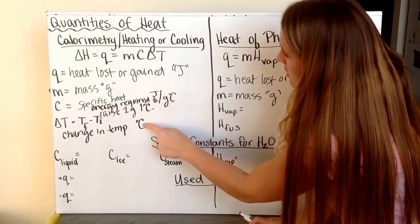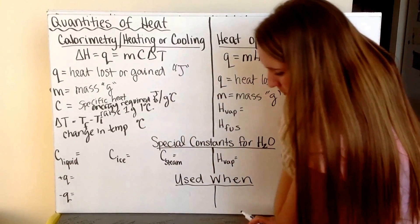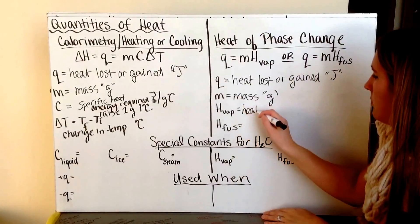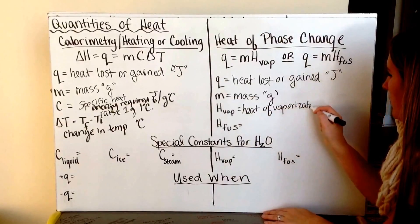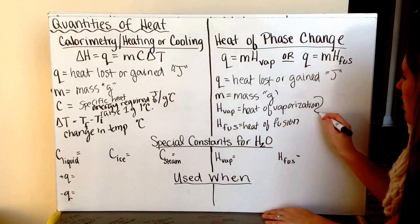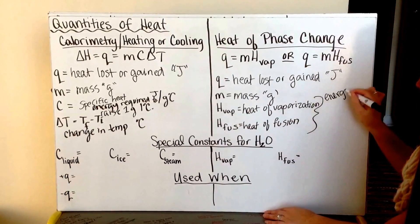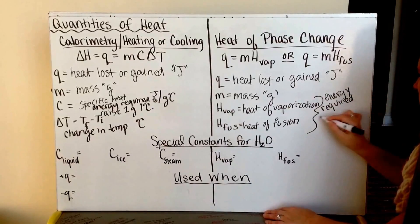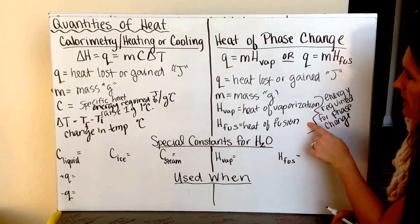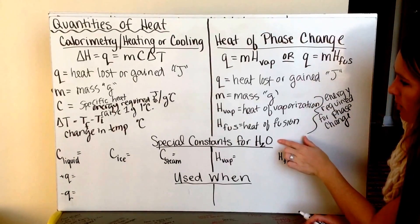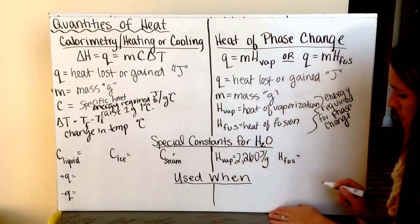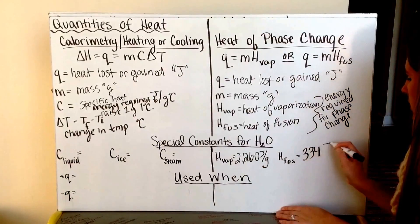Notice that the units — joules, degrees Celsius, and grams — match the units in the specific heat. For the phase change equation, we have heat of vaporization and heat of fusion, which are the energy required for the phase change. For water, the heat of vaporization is 2,260 joules per gram and the heat of fusion is 334 joules per gram.